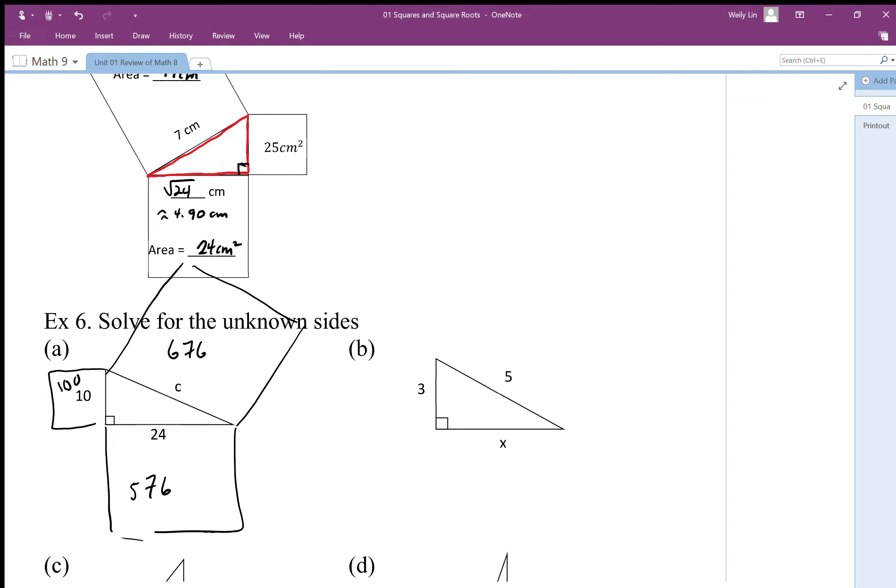So to find out the side length of that side c, what I can do is take 676 squares and square root it. So I end up with c is equal to the square root of 676, which is equal to 26 whatever the units are there.